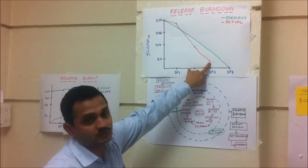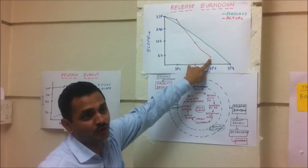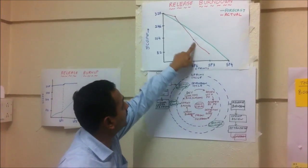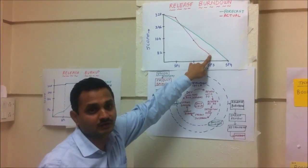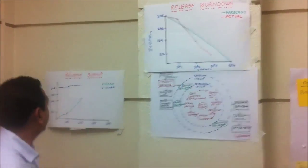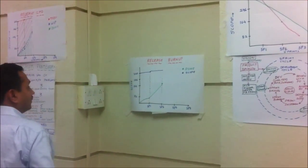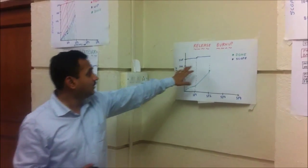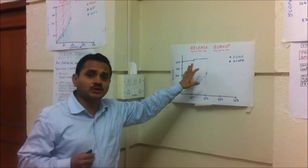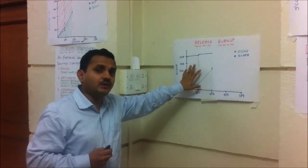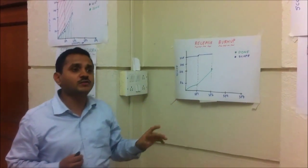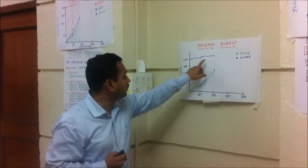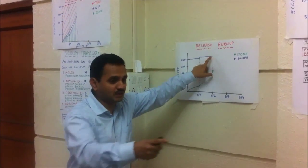We have completed 252 points and remaining 76, so this is the point at which you will draw the line. Now the second thing is we will also draw the burn-up chart. So in this particular sprint, did we have an increase in scope? We did not, so our scope remains the same.